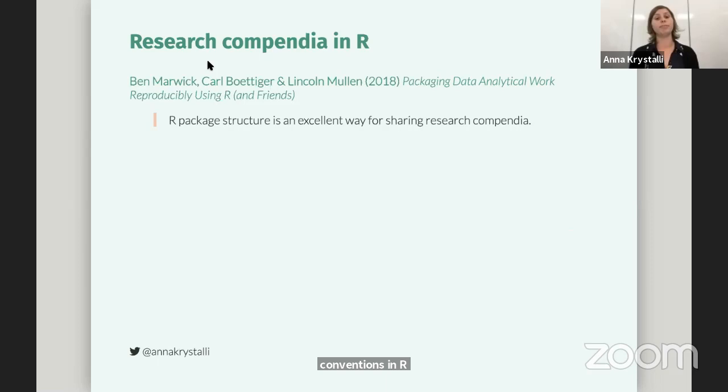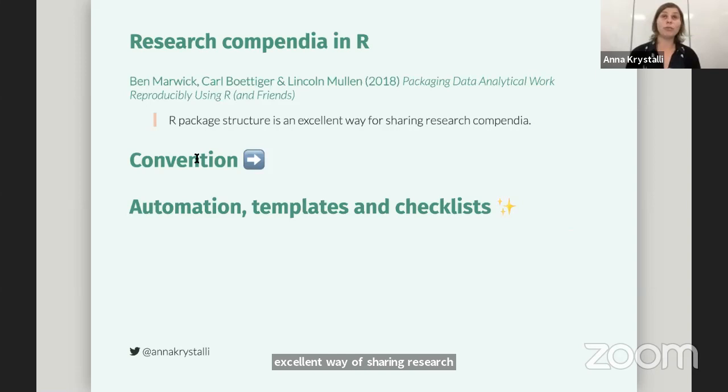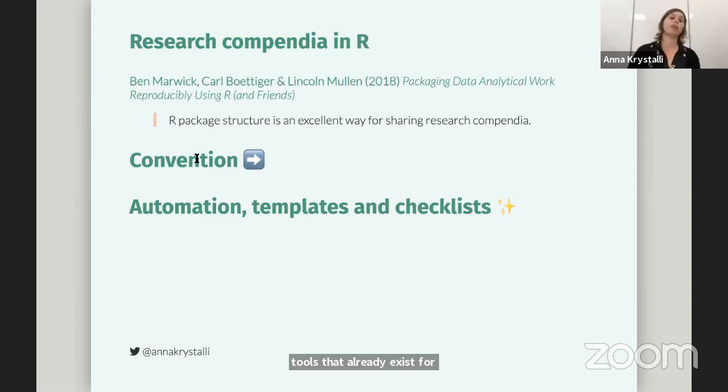Sticking with peer conventions is actually quite powerful. I think we're really lucky in R because a lot of good work has been done on how we can use the conventions in R to build a framework for a research compendium. In this particular paper, Marwick et al. actually make the case that an R package structure is an excellent way for sharing a research compendium. By following the convention of an R package structure, not only do we make all the tools that already exist for testing, documenting, publishing, and sharing code available to us, but we can also build on top of it with automation, templates, and checklists that might be more appropriate for a research compendium.